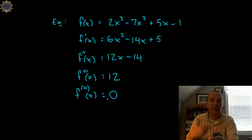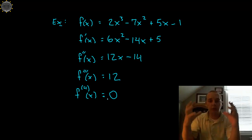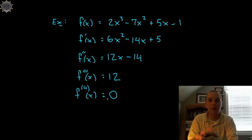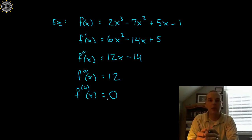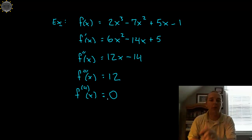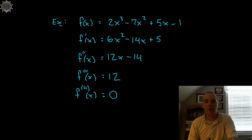Some derivatives are cyclic, repeating, or they don't get smaller. For instance, a lot of trigonometric derivatives don't get smaller. Exponential derivatives, which you'll study later in the course, don't always get smaller either.